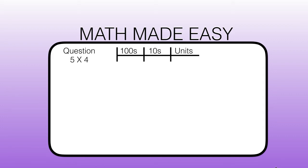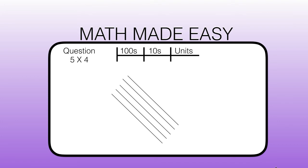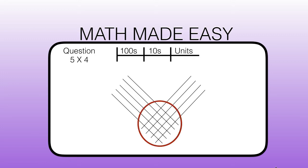The next question is slightly harder. This time we are going to multiply 5 times 4. So again we are going to draw from the top left 5 diagonal lines, and from the top right we are going to draw 4 diagonal lines. We'll draw a circle around where the lines meet and then count our hit points.